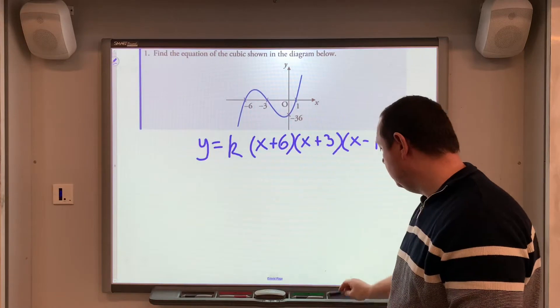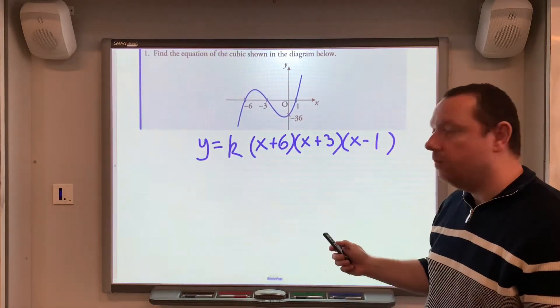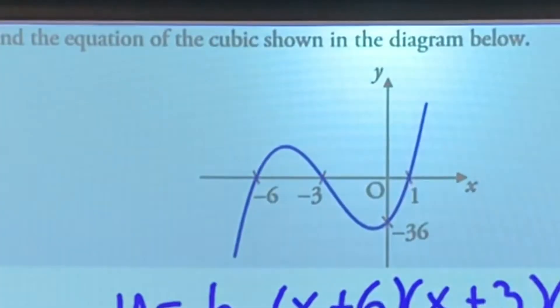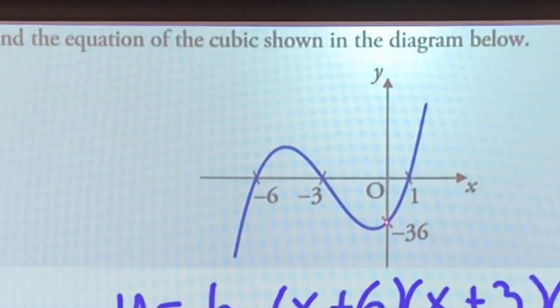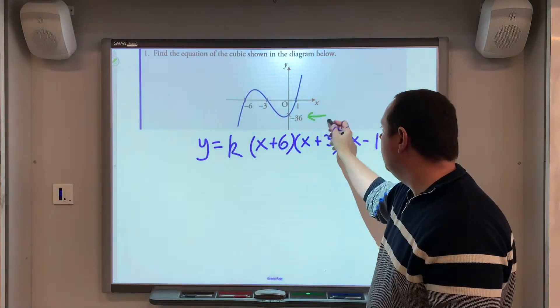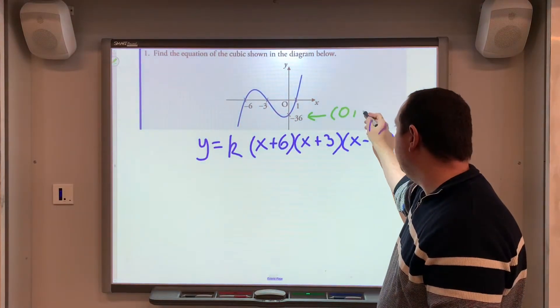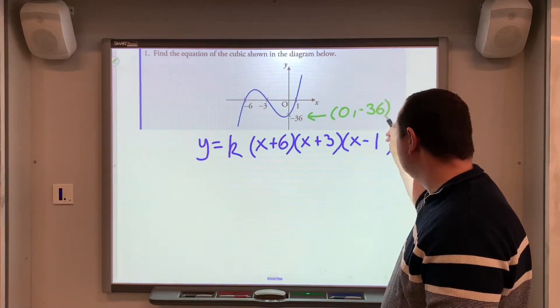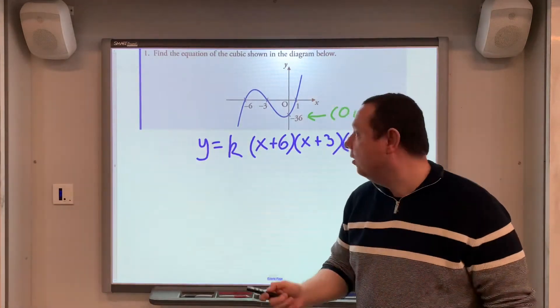And the problem we've got here is, we don't know what k is, but luckily the question helps us, because it tells us one more point. The other point, notice, is minus 36 on the y-axis. So, to be very clear, this point here is the point 0 minus 36. So, we can substitute that into our equation,